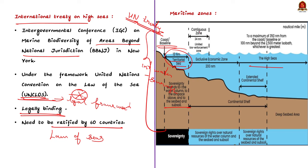The contiguous zone extends seaward up to 24 nautical miles from the baseline. It is an intermediary zone between the territorial sea and the high seas. The coastal state has the right to both prevent and punish infringement of fiscal, immigration, sanitary, and customs law within its territory and territorial sea. Unlike the territorial sea, the contiguous zone only gives jurisdiction on the ocean surface and floor — it does not provide airspace rights.